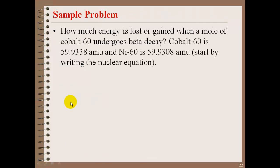So an example of this is how much energy is lost or gained when a mole of cobalt-60 undergoes beta decay. Cobalt-60 is 59.9338 AMU, and nickel-60 is 59.9308 AMU. Start by writing the equation. So we have 60 cobalt, which is number 27, and it's going to go through a beta, which is an electron. And you're going to get 60, 28, NI.